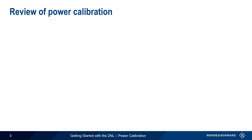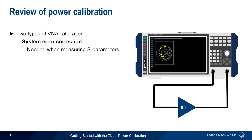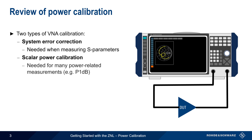Let's start with a very brief review of power calibration. There are two general categories of VNA calibration. The first, and most common, is system error correction, which is needed when making S-parameter or ratio type measurements. The second is called scalar power calibration, or simply power calibration. This type of calibration is needed when making some types of wave or power-related measurements, such as measuring gain compression or the 1 dB compression point.